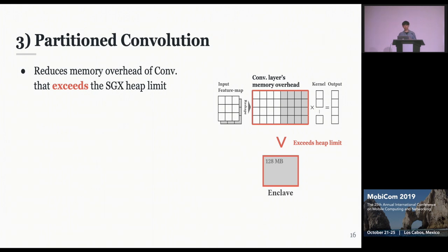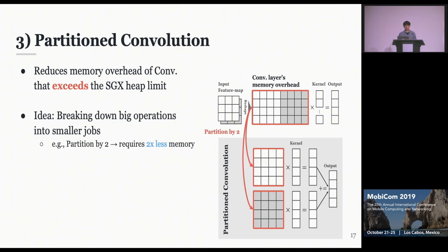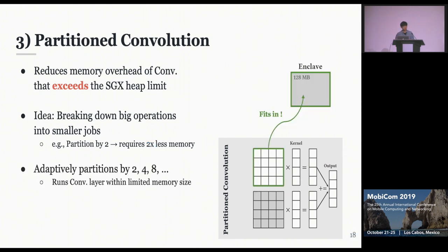The last technique is partitioned convolution. It reduces the memory overhead of the convolution layers, which exceeds the heap limit of the SGX. Our idea is breaking down the big operation into smaller jobs. As you can see in the example in the figure, if we divide the operation by two, then it requires only half of the memory. Our system adaptively divides the operation by two, four, or eight, so we can run the convolution layer with limited memory size while maximizing the inference speed.